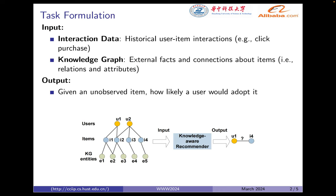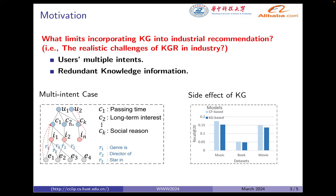KG-enhanced recommendation regards interaction data and a knowledge graph as input, and outputs the predicted affinity between a user and observed items. We discuss the challenges of applying KGR in industrial recommendation systems, which can be concluded into two key facts.